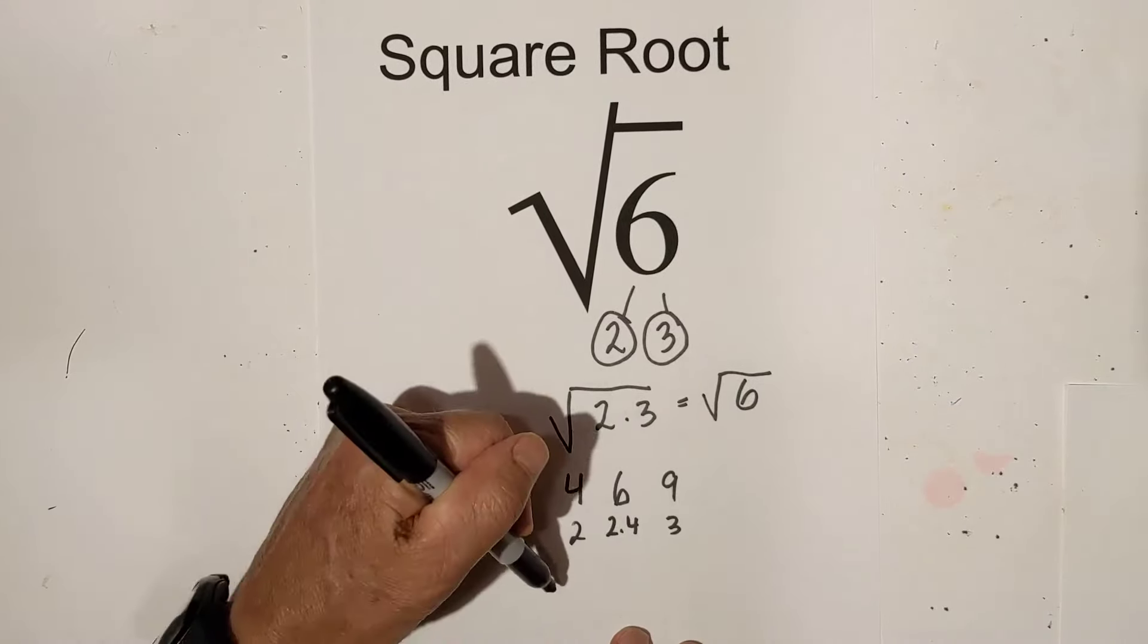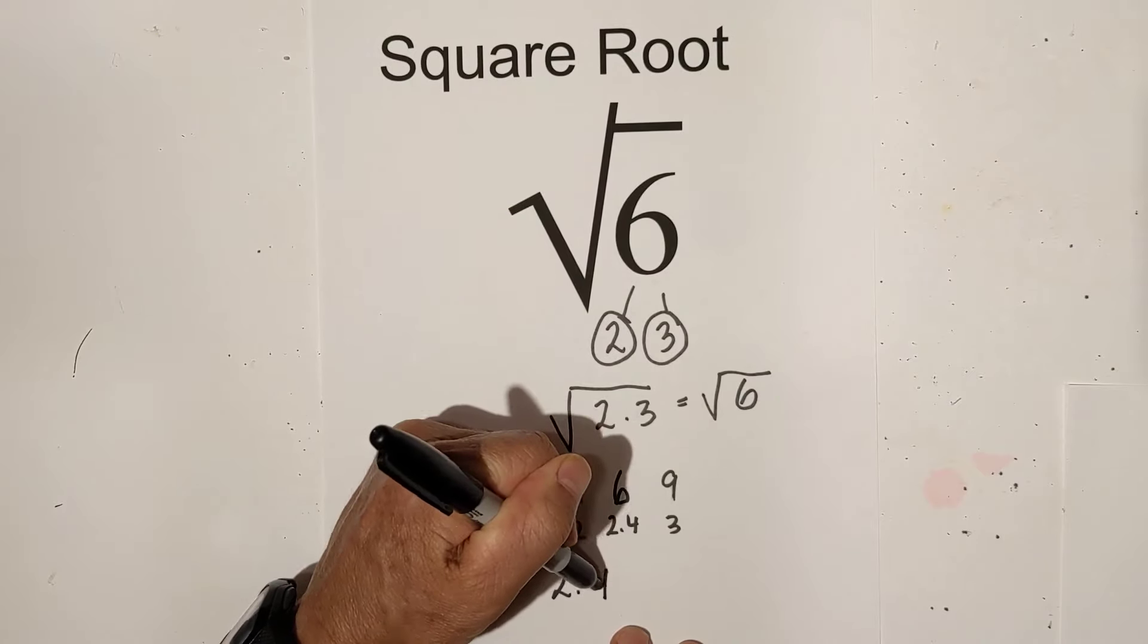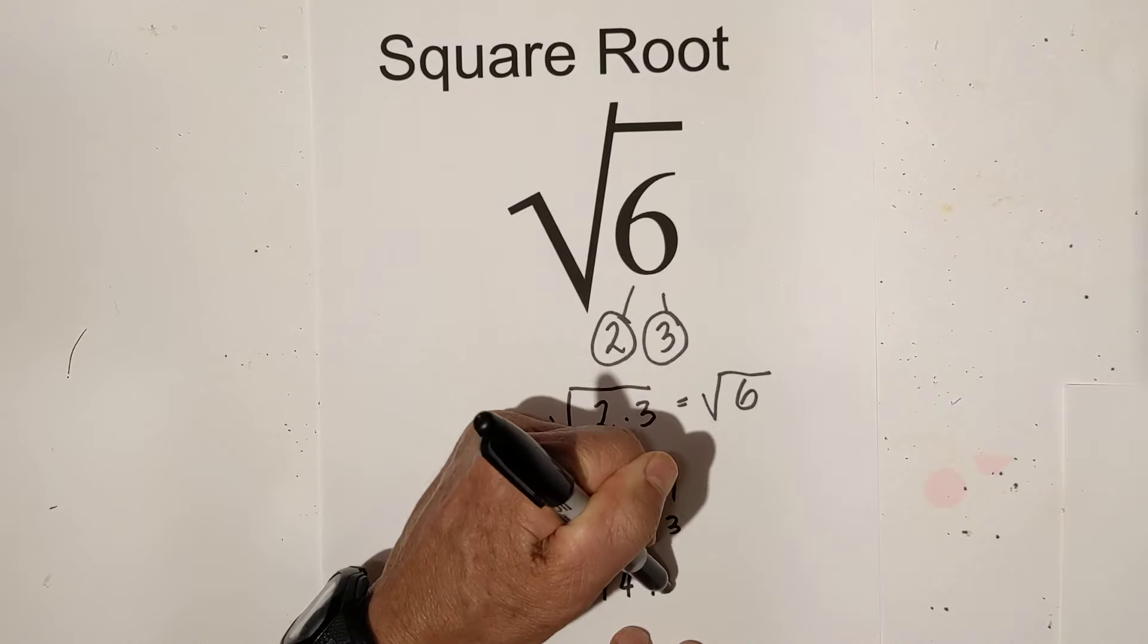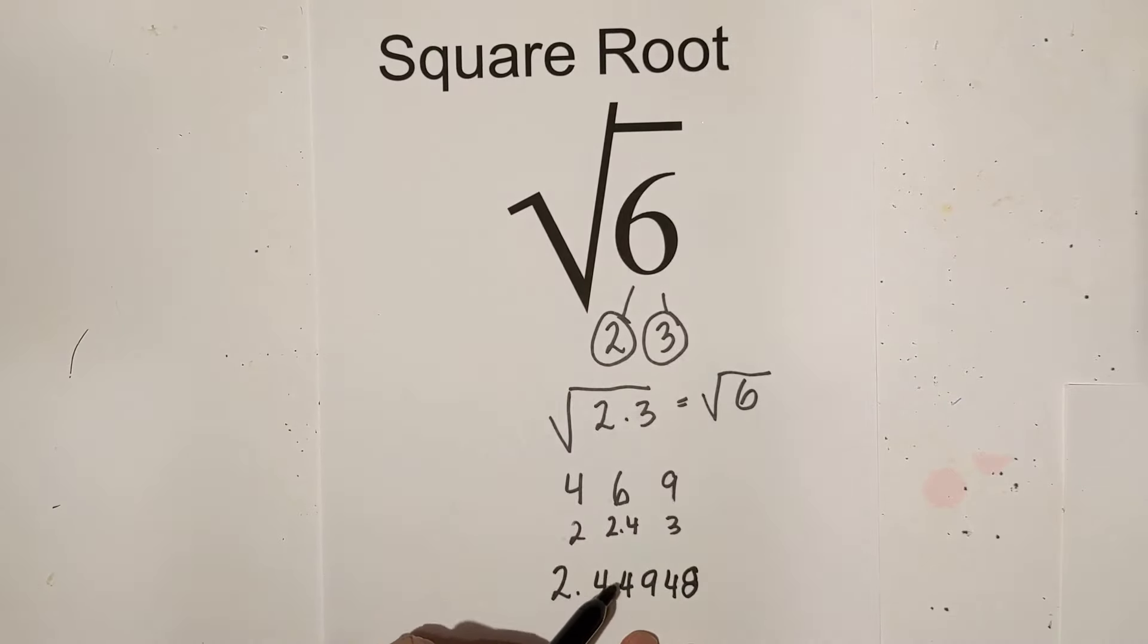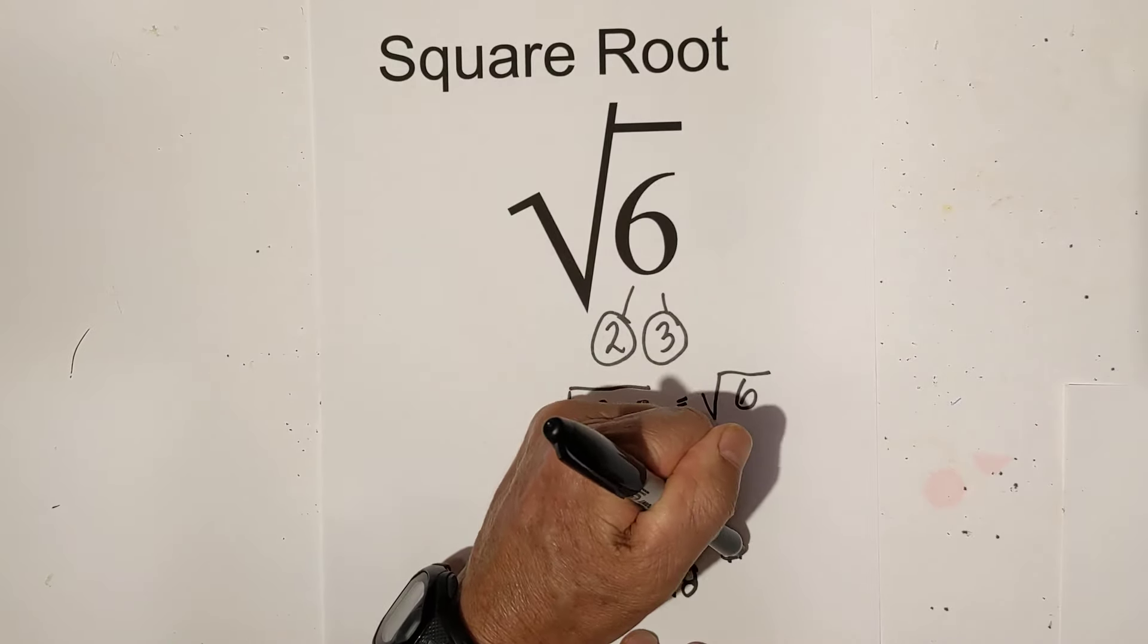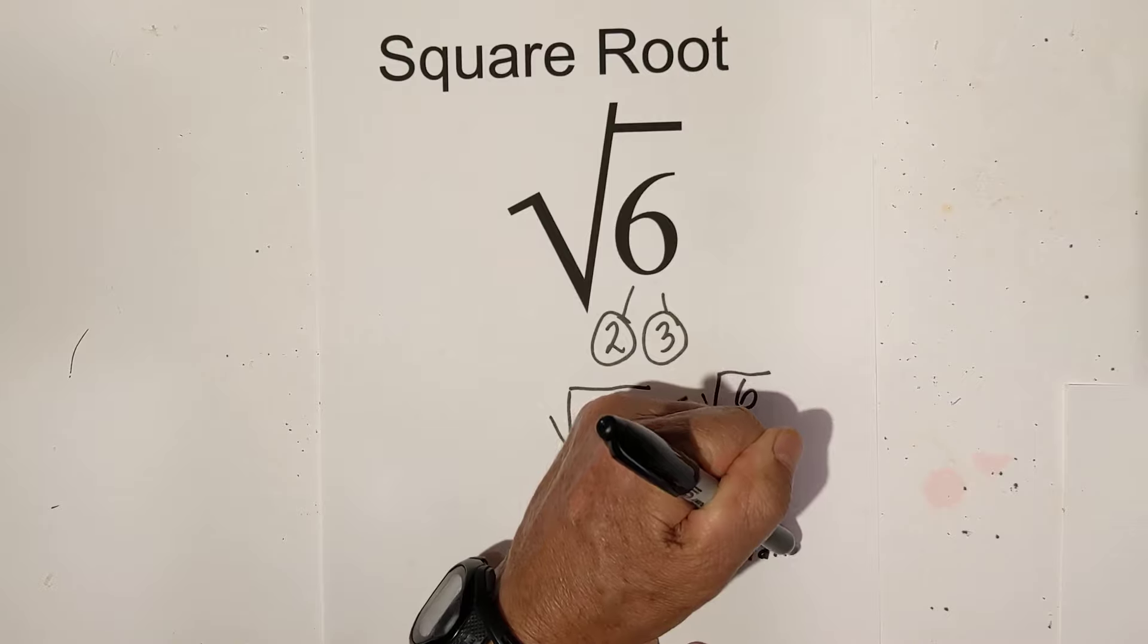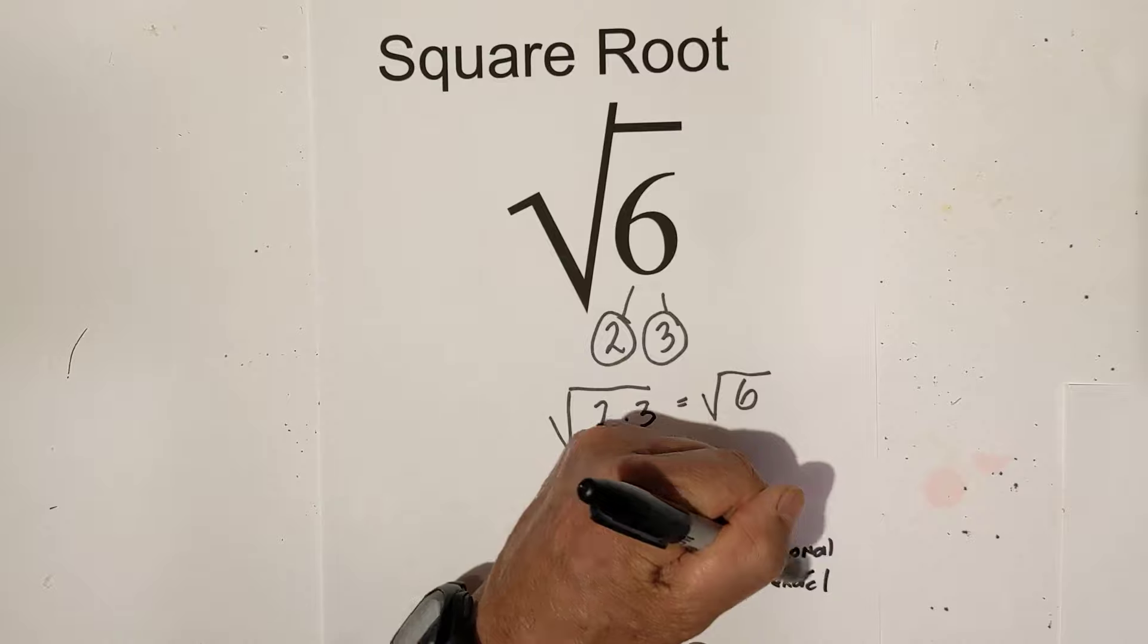And then finally, if you place it in the calculator to 5 places, it is in decimal form. Remember, this is not exact. And so to 5 places, it would be 2.44948. This is an irrational number. And remember, I'll write it again, it is not exact, but it's what you're going to get if you put it in the calculator.